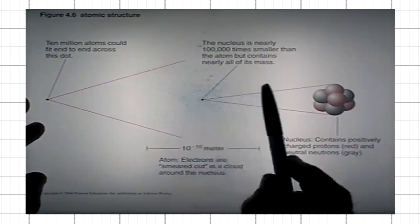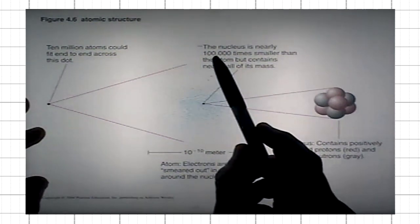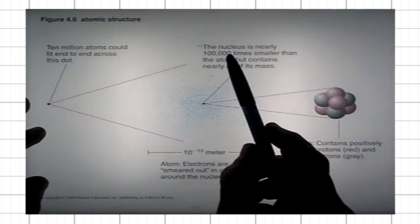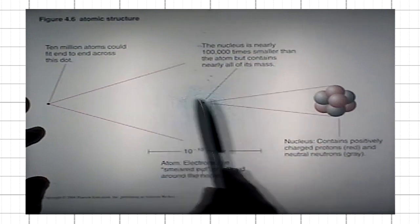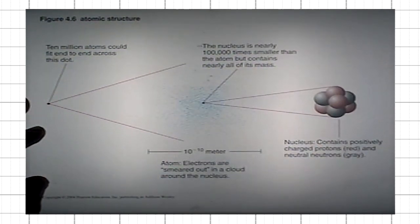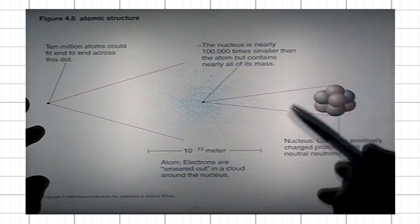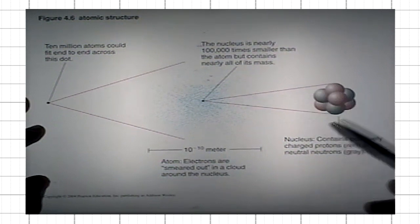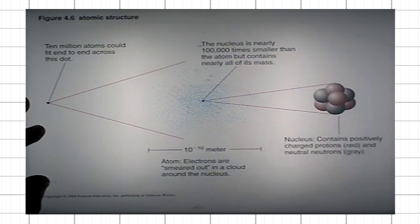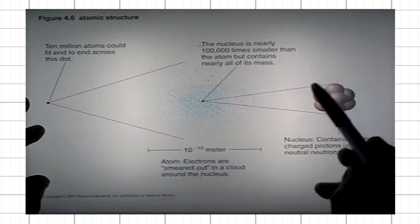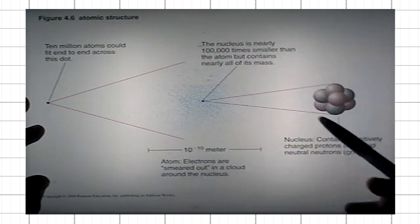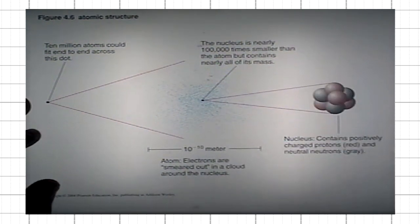The nucleus is actually quite tiny compared to the size of the atom. The nucleus itself is about 100,000 times smaller than the size of the atom. The nucleus is positively charged because it consists of protons, which carry positive charge, and neutrons, which are not charged — but as a whole unit, they carry positive charge.